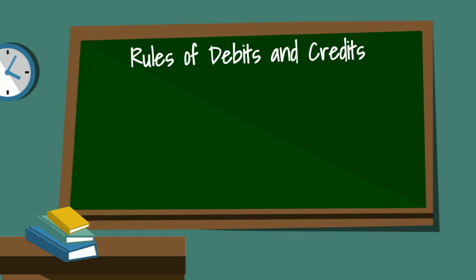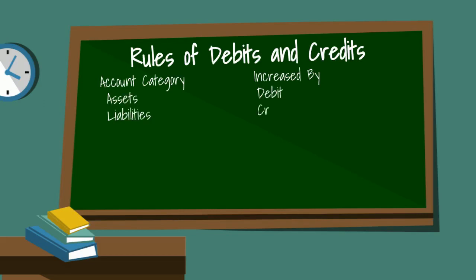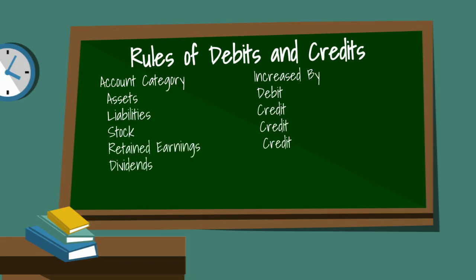Let's list out all the categories of accounts we have and find out what increases each account — a debit or a credit. Whatever doesn't increase the account must decrease it. Assets are increased by a debit, which also means they're decreased by a credit. Liabilities are increased by a credit. Stock is increased by a credit. Retained earnings is increased by a credit. Dividends are increased by a debit. Revenues are increased by a credit. Expenses are increased by a debit.